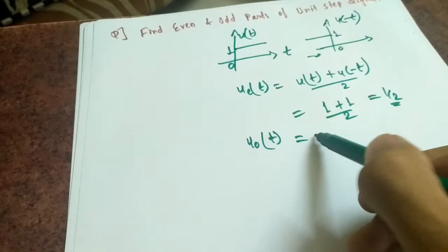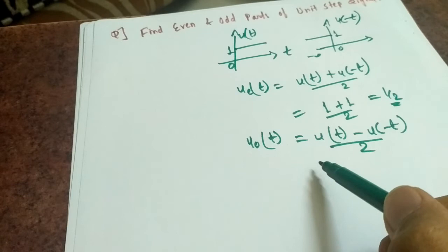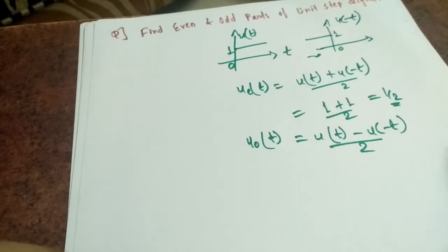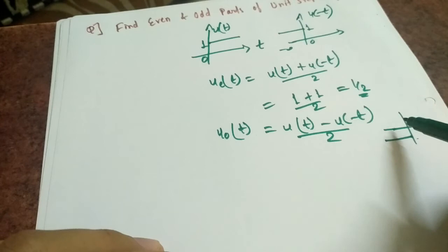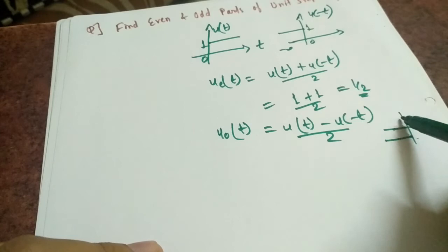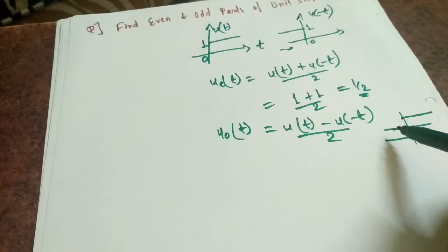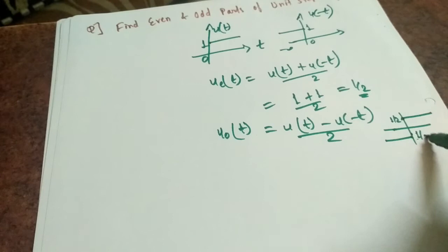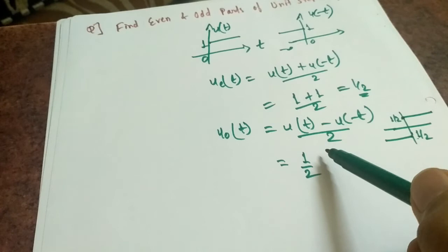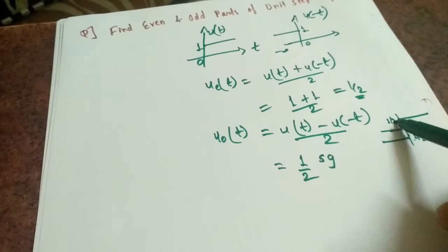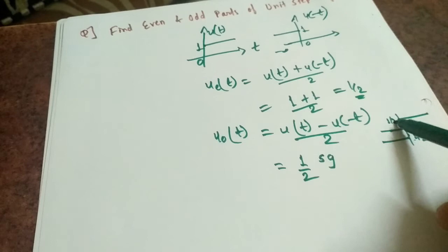The odd part is [u(t) - u(-t)] / 2. Here u(t) is 1 for t > 0 and -u(-t) is the amplitude-reversed time-reversal form. If we add u(t) and -u(-t) and divide by 2, we get — taking one-half as a common factor — the signum function. So the odd part of u(t) is one-half times the signum function.